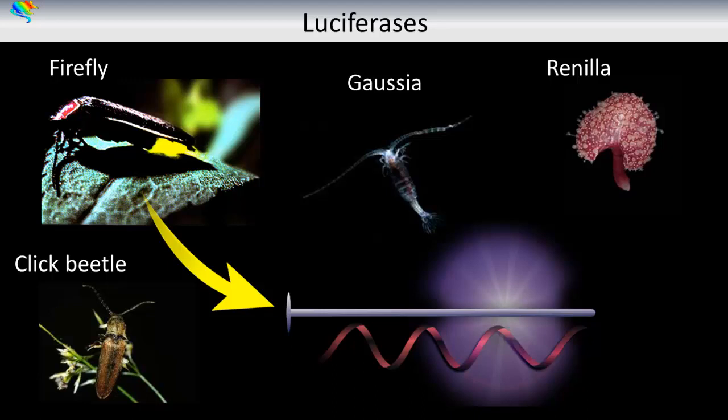Firefly and Click Beetle Red Luciferase emit around 600 nm, while Click Beetle Green, Renilla, and Gaussia emit around 500 nm. As tissue is more permeable to light above 600 nm, the Firefly and Click Beetle Red Luciferases will offer higher sensitivity in vivo.